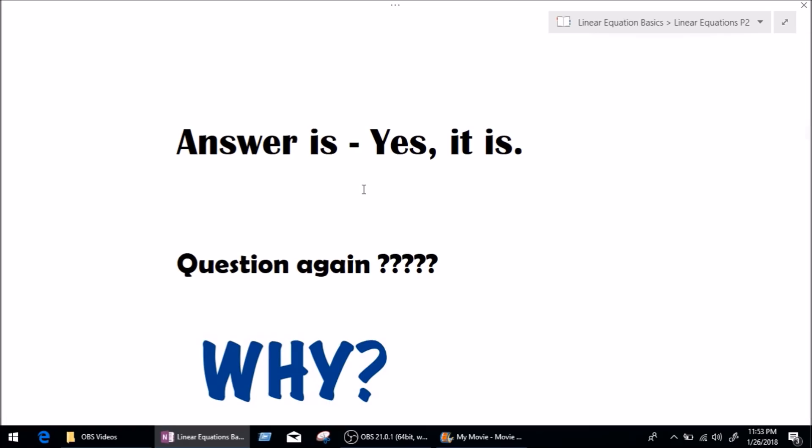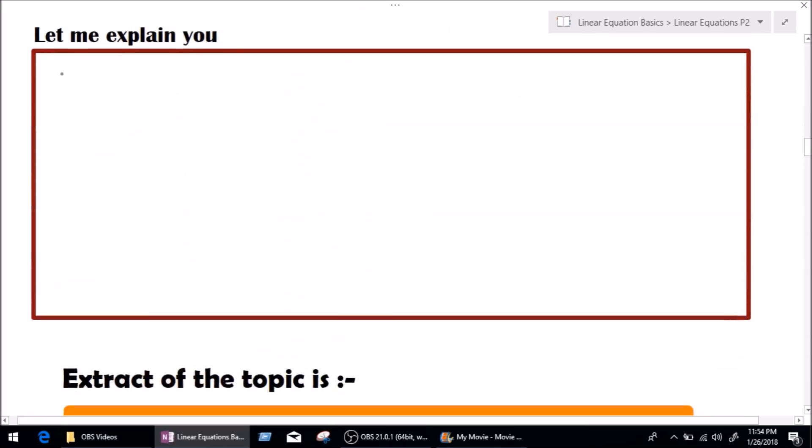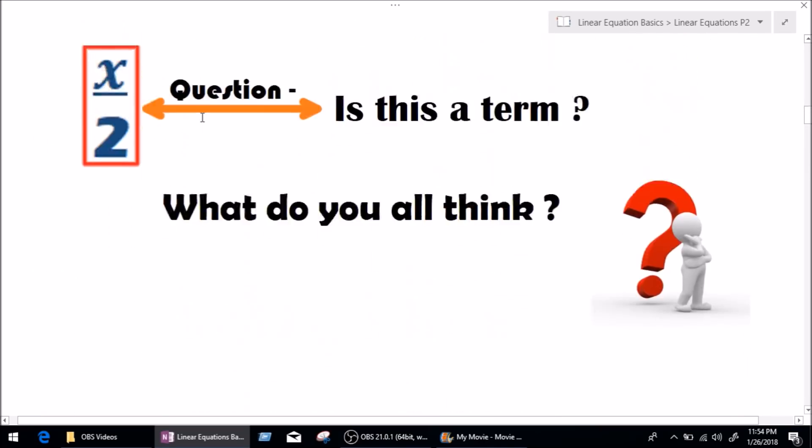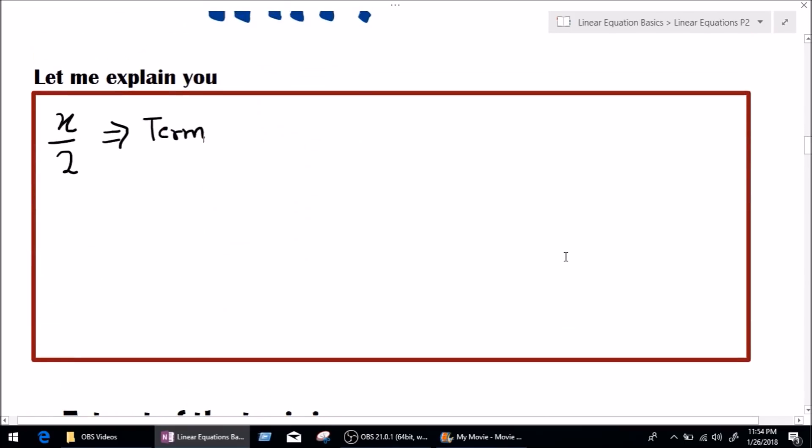Now, the same question again. How and why? And the answer is, let me explain you. Let me write down the same term x over 2. Now, I say that x over 2 is a term. Earlier I said that division cannot separate a term as well as multiplication. Now, why multiplication cannot separate a term? We just learned up above. So now we are going to learn how division cannot separate any term.